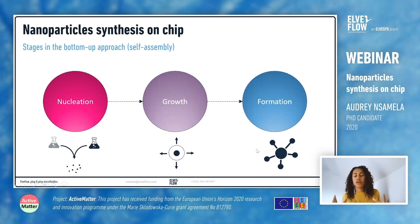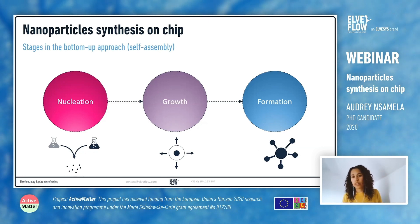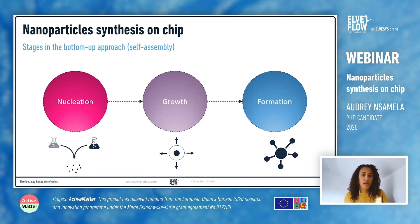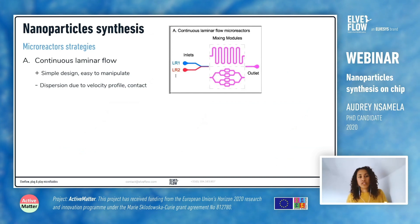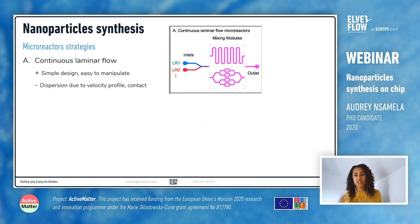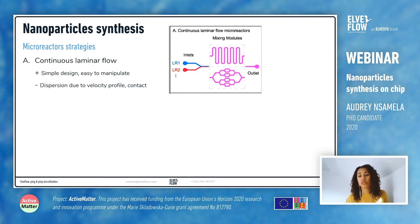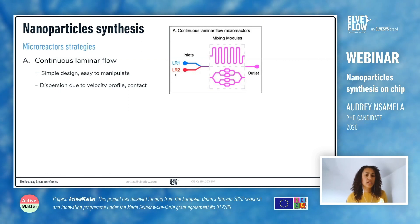The last stage is when you have the formation of stable nanoparticles and they don't grow anymore. They can be stabilized by surfactants, ions, polymers, or other ligands. At this stage you have no more growing nanoparticles and they are stable, so they don't agglomerate with each other. In microfluidics, you have a few strategies to achieve this. The first one is to use continuous laminar flow microreactors — this is a very simple design and easy to manipulate.